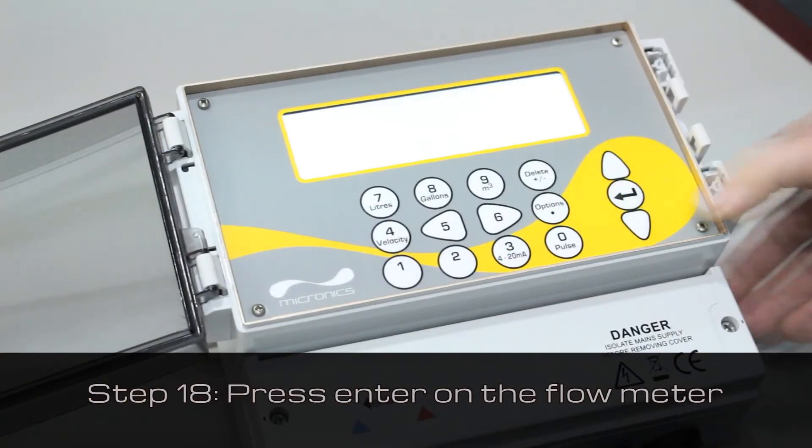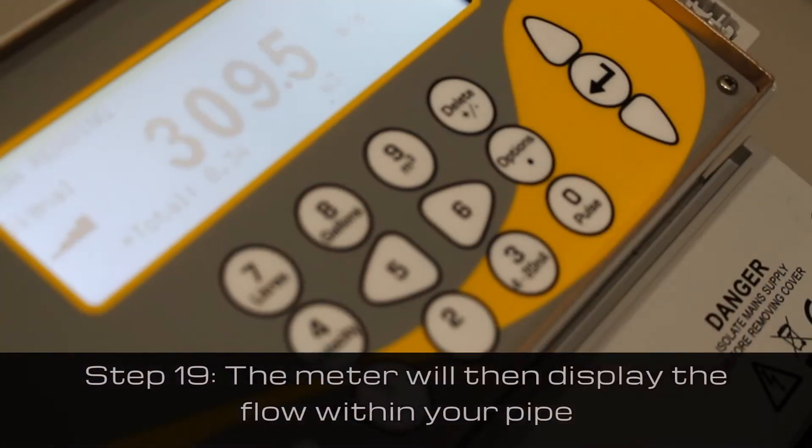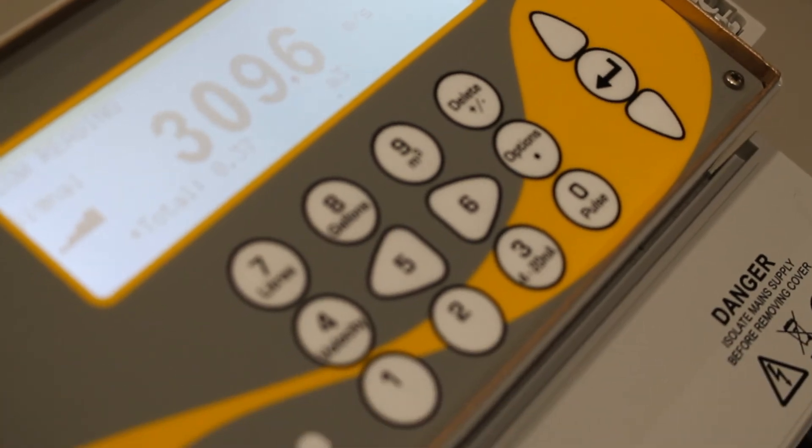Press enter on the flow meter. Once the flow has been switched on, the meter will display the flow within your pipe.